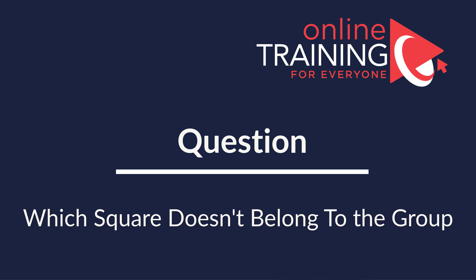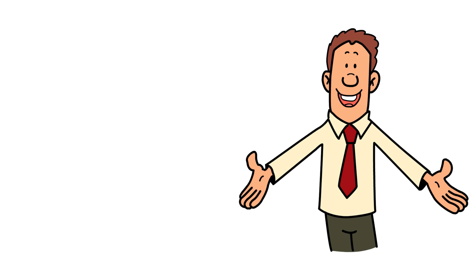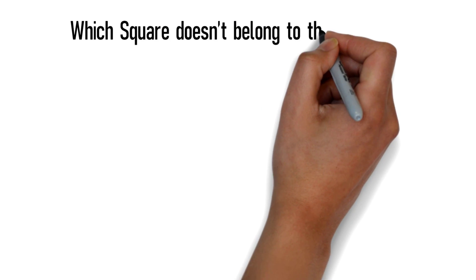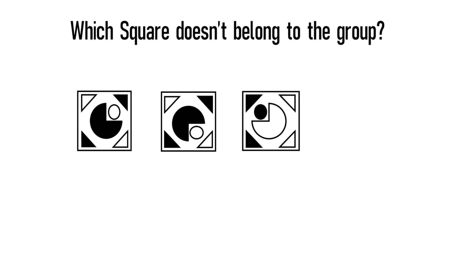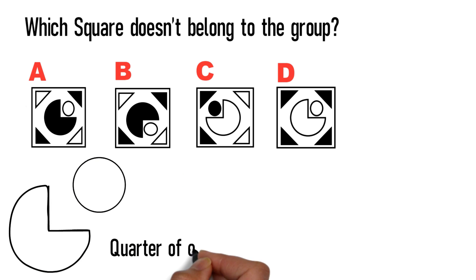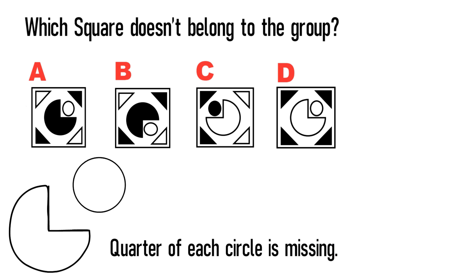I'm excited to share with you how to solve these types of problems on the test. Typically, when you get a problem, you need to determine which object does not belong to the group. In this particular case, you need to determine which square doesn't belong to the group. You're presented with 4 different squares — choices A, B, C, and D. Each square contains 2 circles inside. In the large circle, a quarter of each circle is missing and replaced with the small circle. All squares also have triangles in the corners.